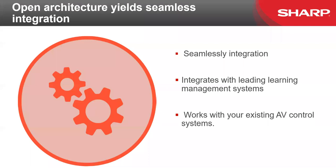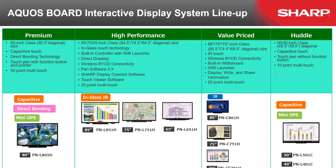A key product SHARP is well known for in the education market is our Aquos Board interactive displays. We carry a range from 40 inches all the way up to 85 inches, from 4K to 8K displays. You'll want to think about how many points of touch you need, what size display, and where you'll position it. In university lecture halls, you may have displays in the very front as well as on each side.